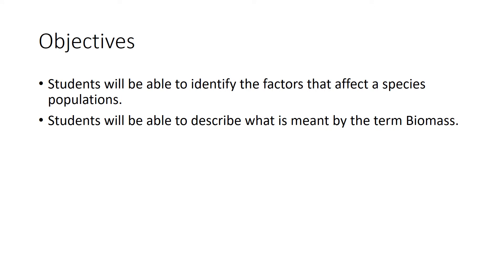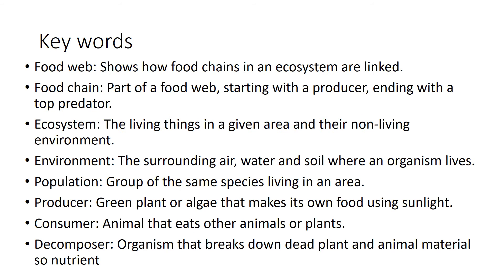In today's session, our objectives are that you'll be able to identify the factors that affect a species' population — so the number of different organisms within that population, like how many foxes or rabbits there are in a certain area. You'll also be able to describe what is meant by the term biomass, which ties heavily with food chains and food webs from last session.